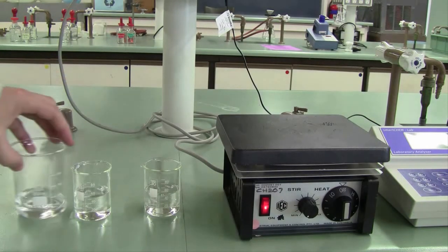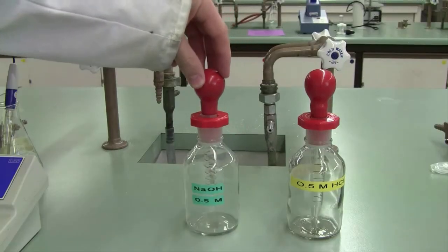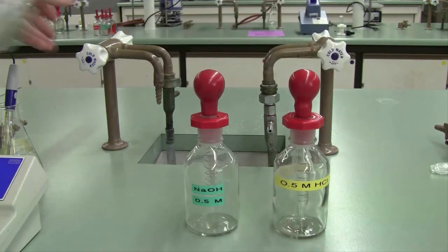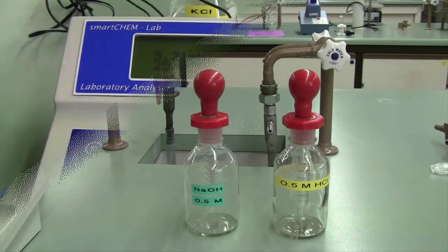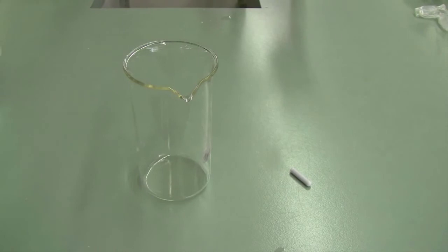We're then going to observe the properties of a buffer by adding sodium hydroxide, hydrochloric acid, and tap water to our different buffer solutions, and watching the effect that that has on the pH. When you finish this section of the experiment, please make sure you don't tip the magnetic stirrer bar, the flea, down the sink.